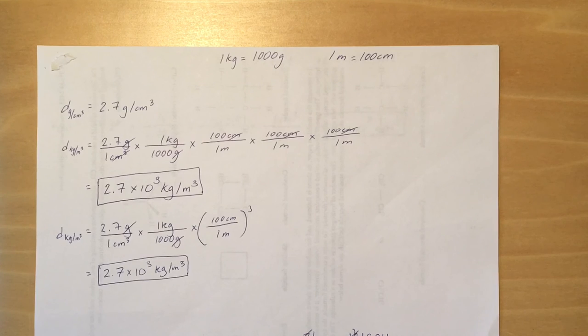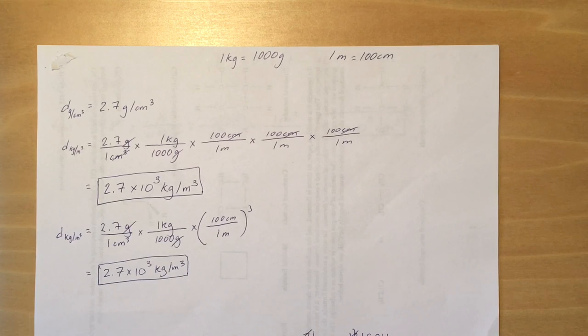Remember your sig figs, 2 sig figs in the answer if the given numbers had 2 sig figs, which they did, 2.7. Okay, hopefully this helps. Let me know if you have any questions.